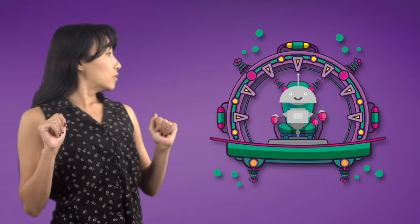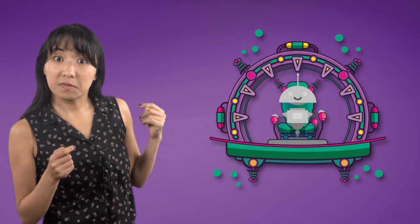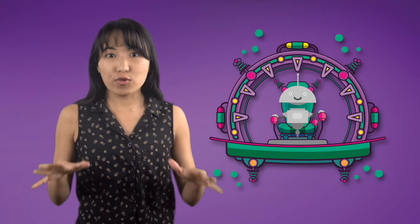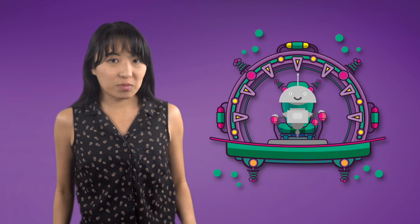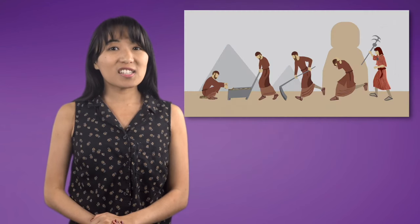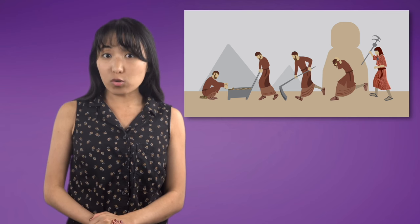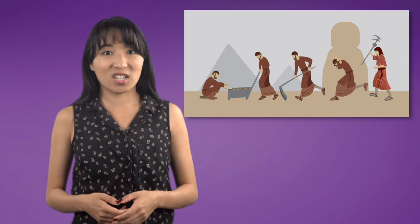Hello, everybody. Mia's got a time machine. Today, Mia is going to take us on a journey through time back to ancient Egypt to learn about the story of Passover, a time when the Israelites were enslaved and a brave man named Moses did some pretty amazing things to set them free.